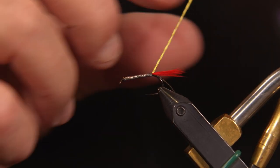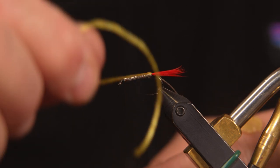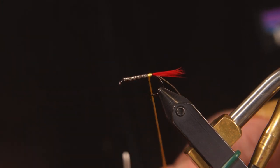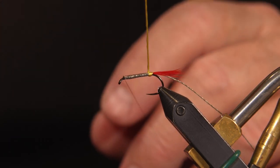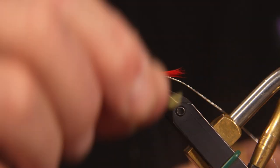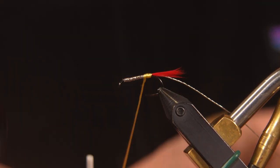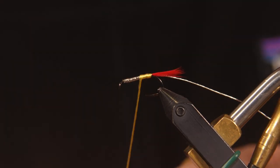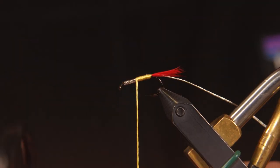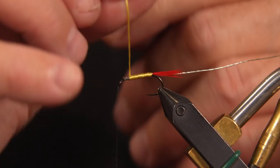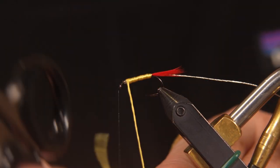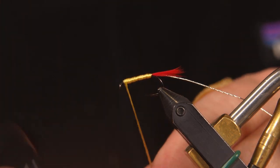Next thing I'm going to do is wrap in my yellow floss. I take one wrap behind the rib and then spiral touching wraps all the way forward to just behind the eye again, leaving myself some room so I can tie the hackle in.